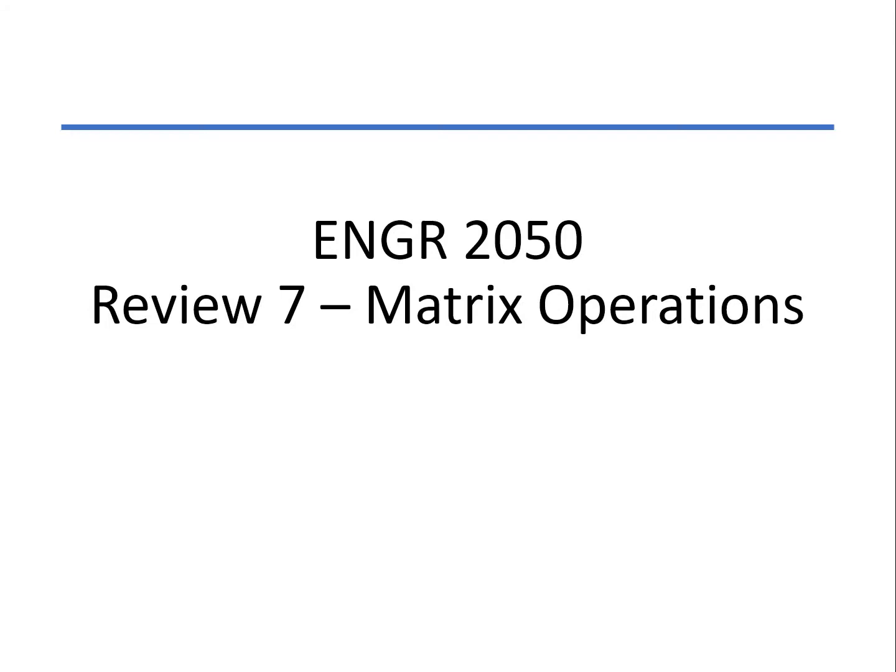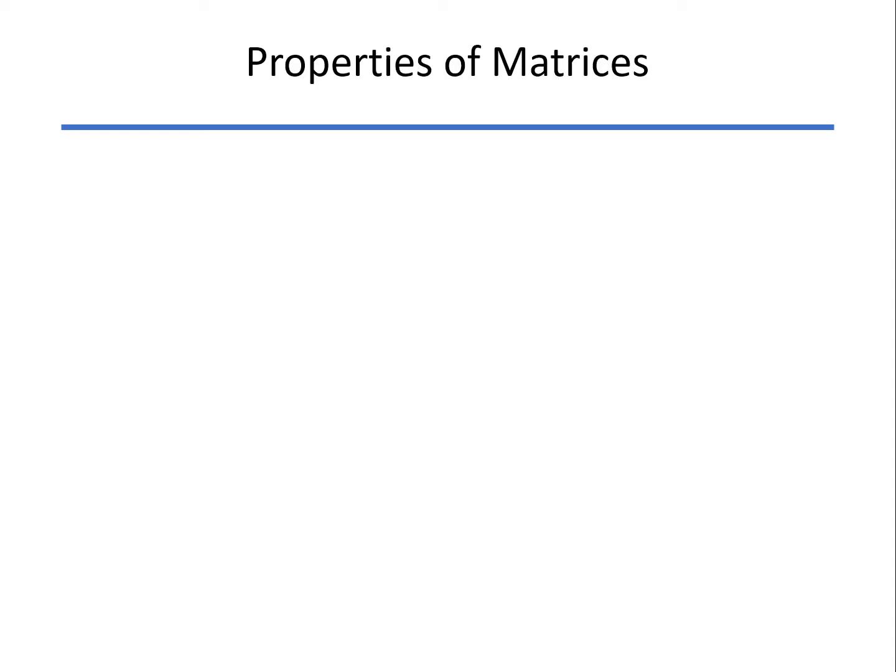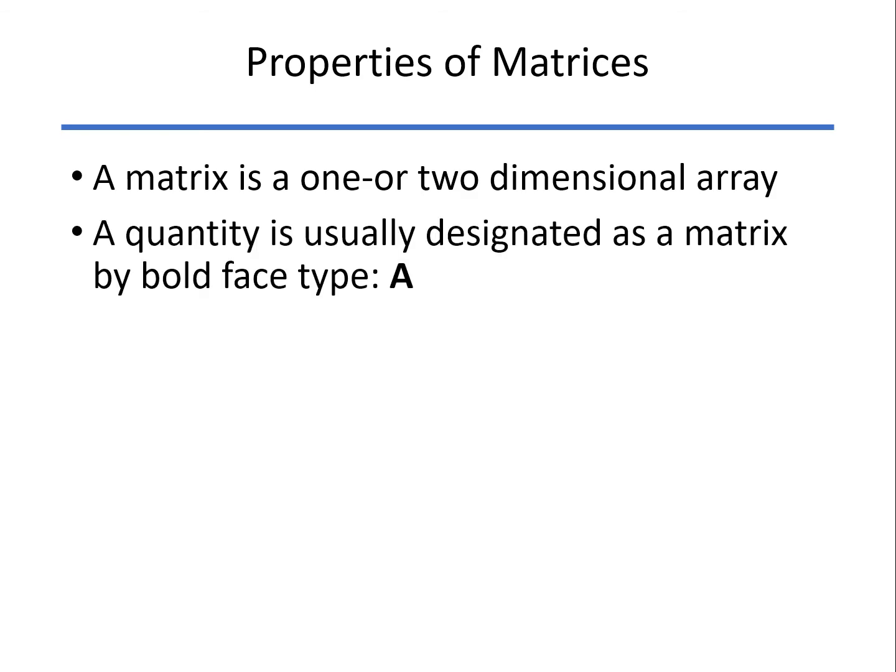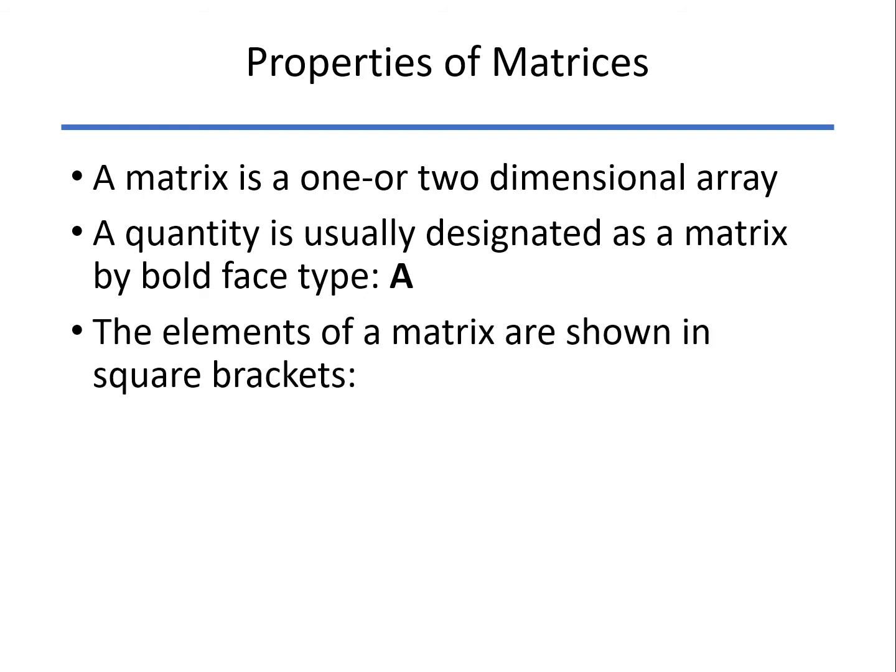Now we're going to look at matrix operations. We'll look at how to do some of them by hand, and then how to do them in both MATLAB and Excel. Properties of matrices: a matrix is just a one- or two-dimensional array. We usually designate it by boldface type, and we show the elements within square brackets.